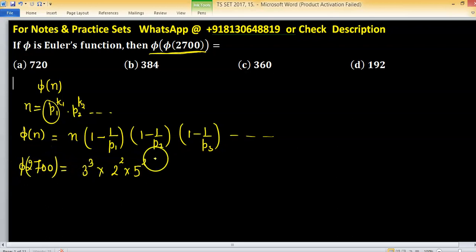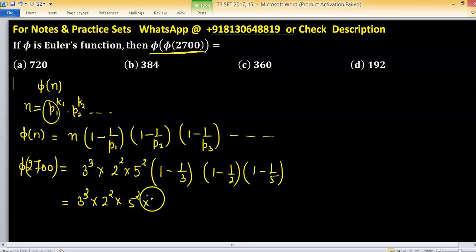So phi on both sides, value of this one will be (1 - 1/3), 3 is first prime, second is (1 - 1/2) and third is (1 - 1/5). Now this value equivalent to 3 cube and 5 square you will get from this basis 2/3 into 1/2 into 4/5.